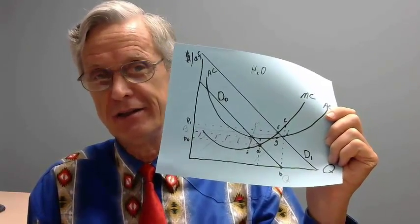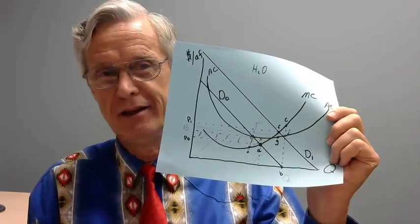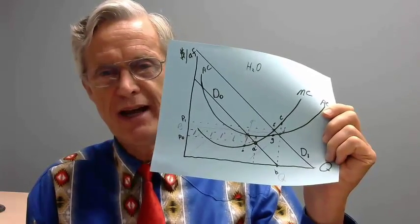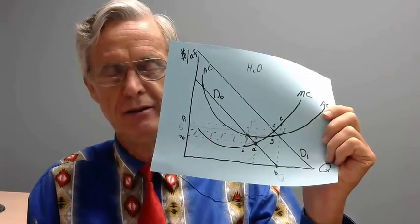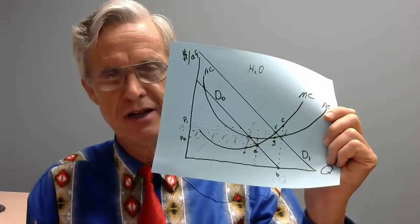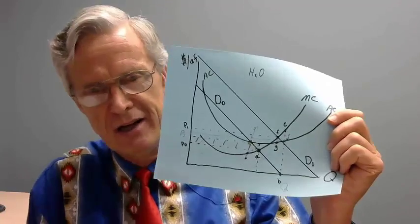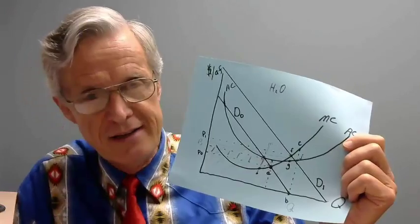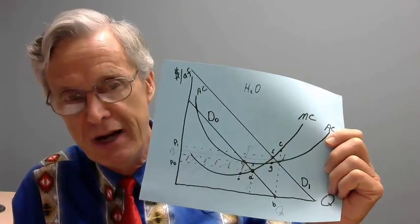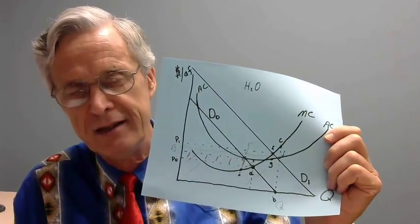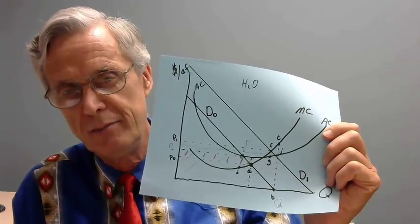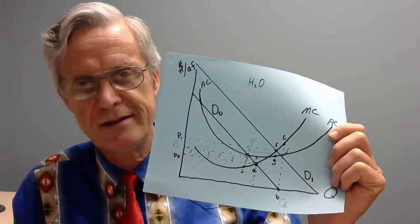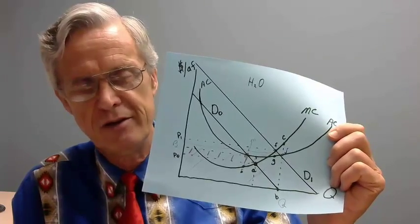SAWS has occasionally gone to city council and asked for money to cover their losses over a particular time period. Point A indicates the efficient price at demand level D0, but point A is below the average cost line. That red shaded area is a loss if we practice efficient pricing with demand level D0. Efficient pricing means: set the price equal to the marginal cost.